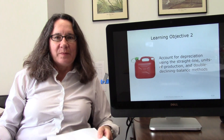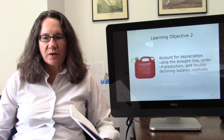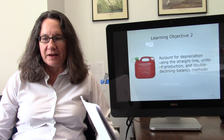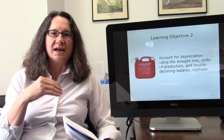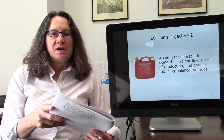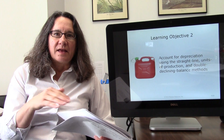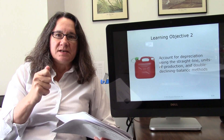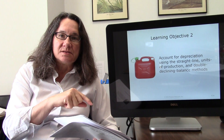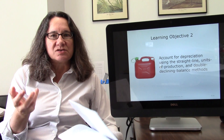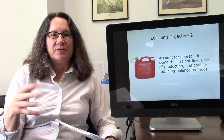So far we have been talking about costs for property, plant and equipment assets. These plant assets are things like the building, the land, equipment, machinery, and we talked about how the cost that goes on the books is everything that goes into getting it ready to use. Then we talked about the fact that some costs after the thing is in use extend the life or make that equipment better, and we add those to the value of the asset. Some things are just repairs and maintenance, so we expense those. So we had this idea of capital versus revenue expenditures.